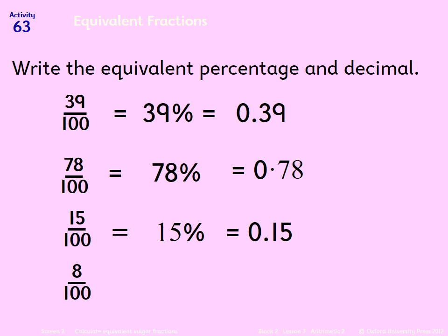The only slightly trickier one is this one at the bottom, 8 over 100, which is 8%. But when we turn it into a decimal, we need to remember it's 0.08. Don't forget about that zero.